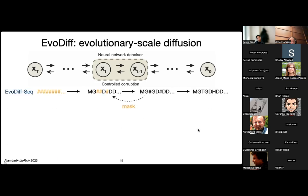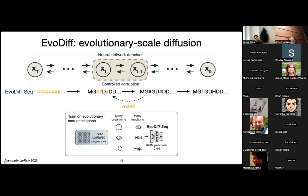It turns out that the first scheme does work a little bit better, and so we're going to call that model EvoDiffSeq. The reason we call it EvoDiff is because of the scale of the training — we train on sequences from many organisms that do many functions, around 50 million sequences, and we train a 640 million parameter model. We do try different model sizes and show in our preprint that this corruption scheme is the only one of the two that scales, improving as model size gets bigger, which is one of the reasons we pick it.